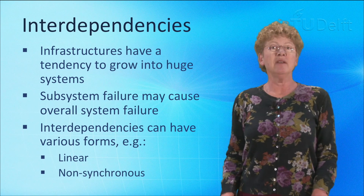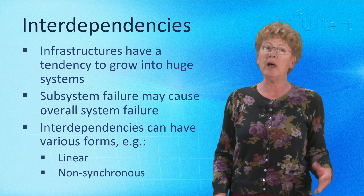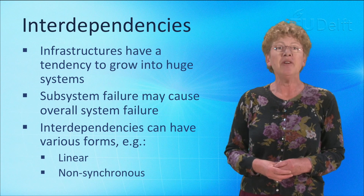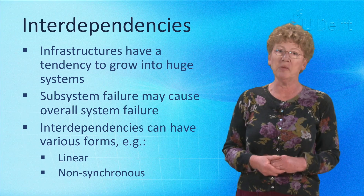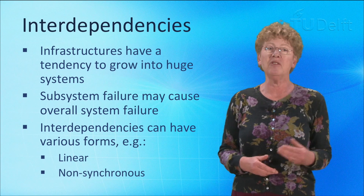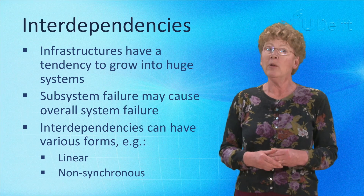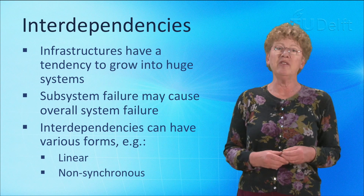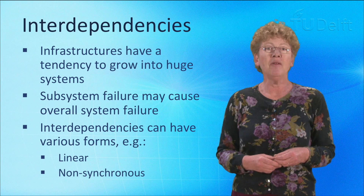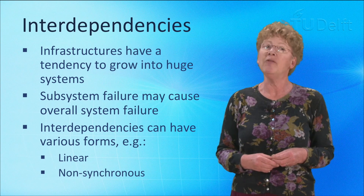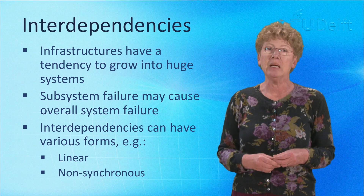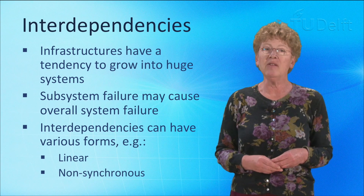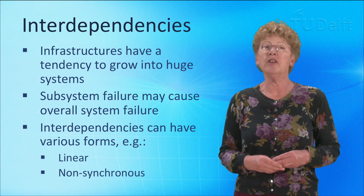Economies of scale and network externalities explain why infrastructure systems for energy, transport, telecommunication and information services have a natural tendency to grow into huge systems comprising a huge number of subsystems, links and nodes, all of which are interdependent in several ways. So if one subsystem is not functioning well, this may have far-reaching repercussions on the functioning of the overall system. The interdependency of the subsystems can take various forms, from simple linear dependencies to multiple non-synchronous relationships.